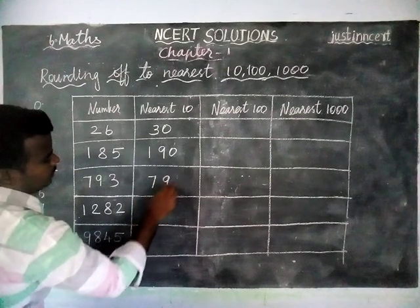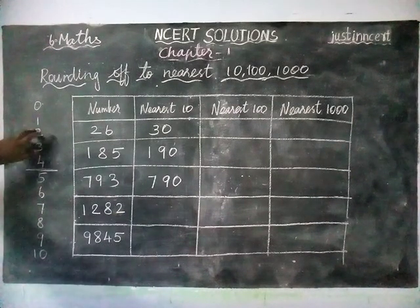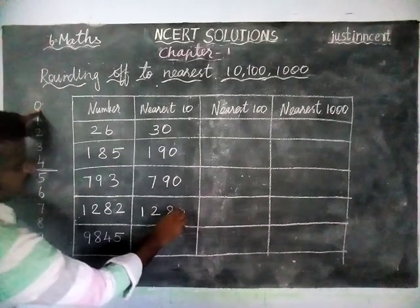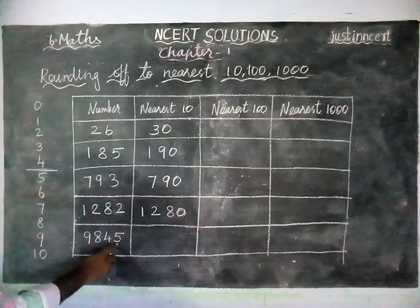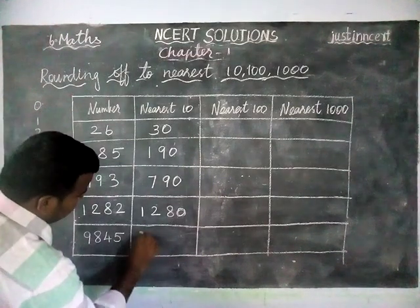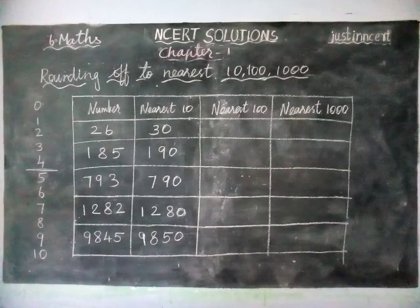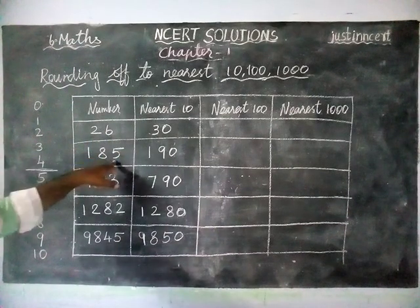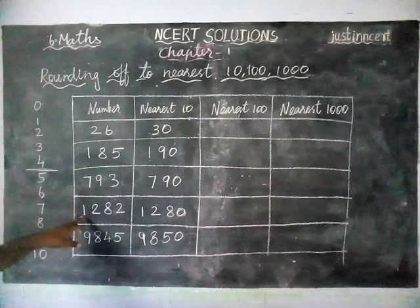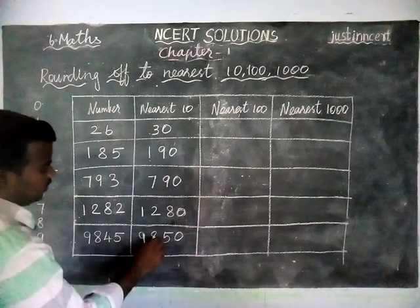And for the next number, 1282, the ones place is 2. Since 2 falls in the 1–4 range, we choose the previous 0, which is 1280. For 9845, the ones place is 5. When 5 comes, we take the next 0. The rounded off number is 9850. So rounding to nearest 10: 26→30, 185→190, 793→790, 1282→1280, 9845→9850.